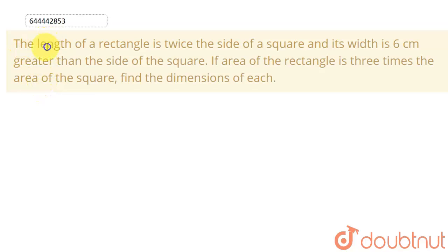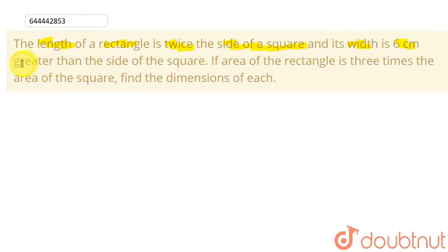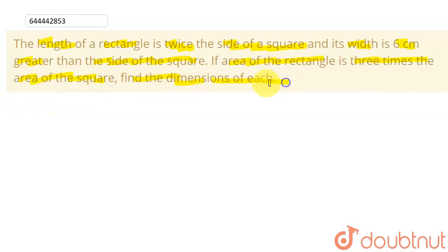So students, in this question we are given that the length of a rectangle is twice the side of a square, and its width is six centimeters greater than the side of the square. The area of the rectangle is three times the area of the square, and we need to find the dimensions of both the square and the rectangle.